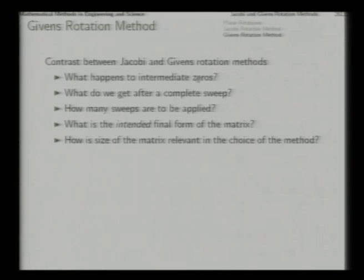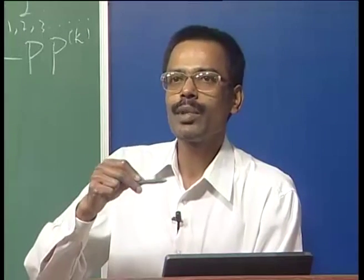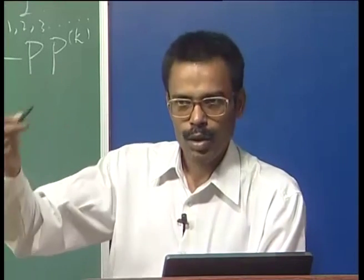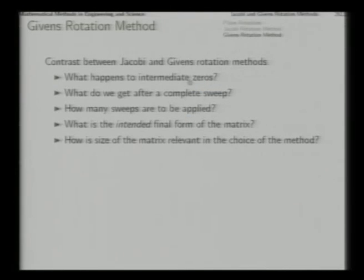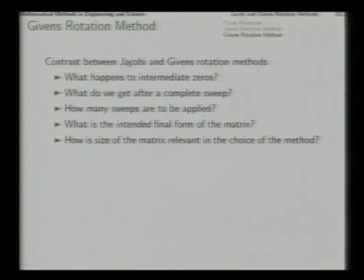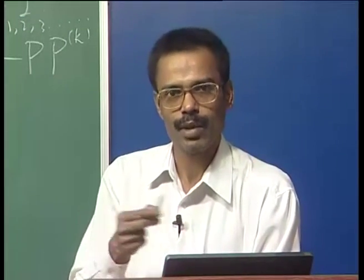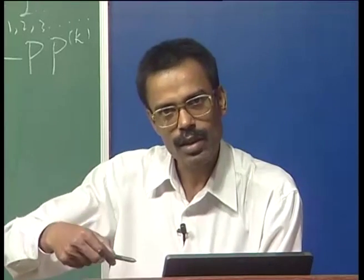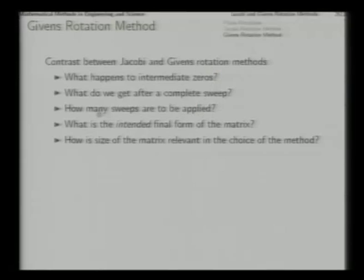First question: what happens to intermediate zeros? In the case of Jacobi rotations they get spoiled; in the case of Givens rotation they are preserved. Second question: what do we get after a complete sweep? In the case of Jacobi rotation we get another full matrix but with off-diagonal terms reduced in magnitude. In the case of Givens rotation after a complete sweep we get a completely symmetric tri-diagonal matrix.